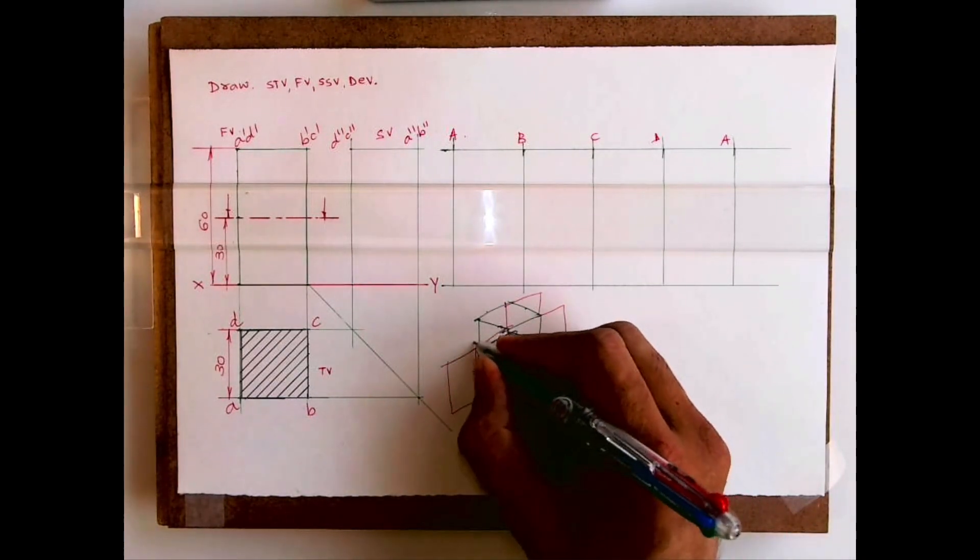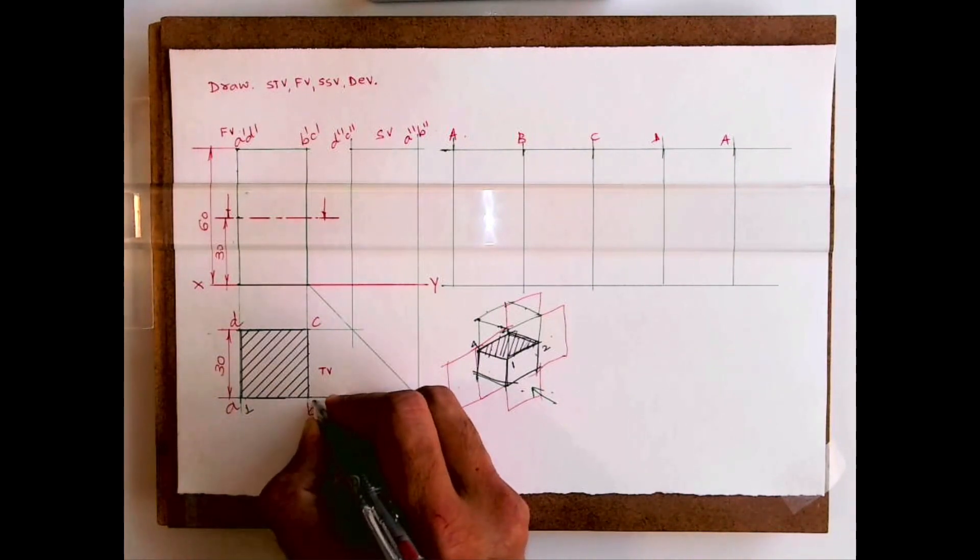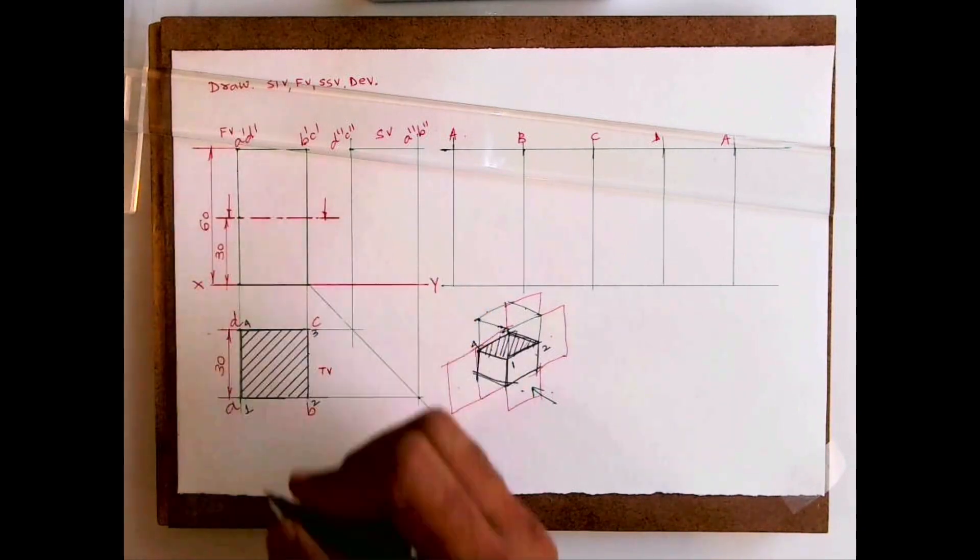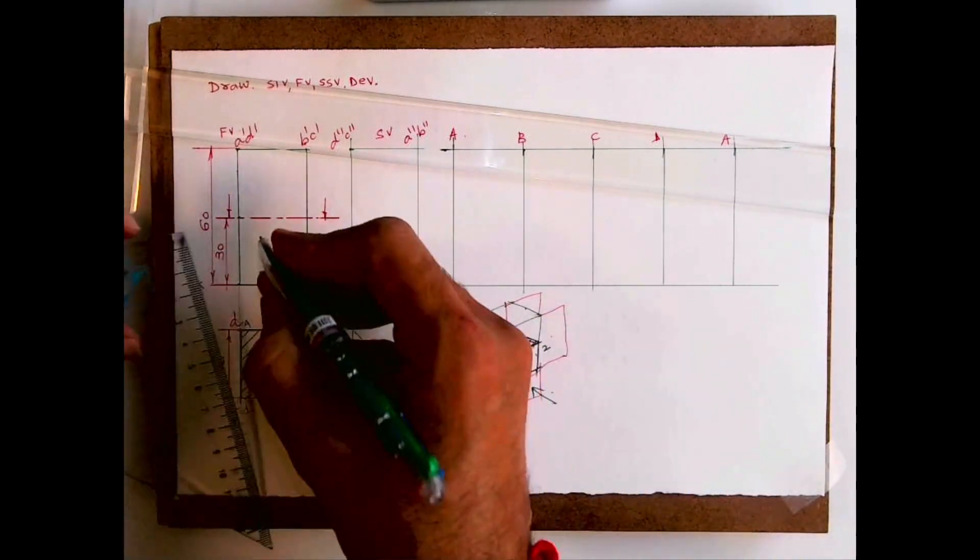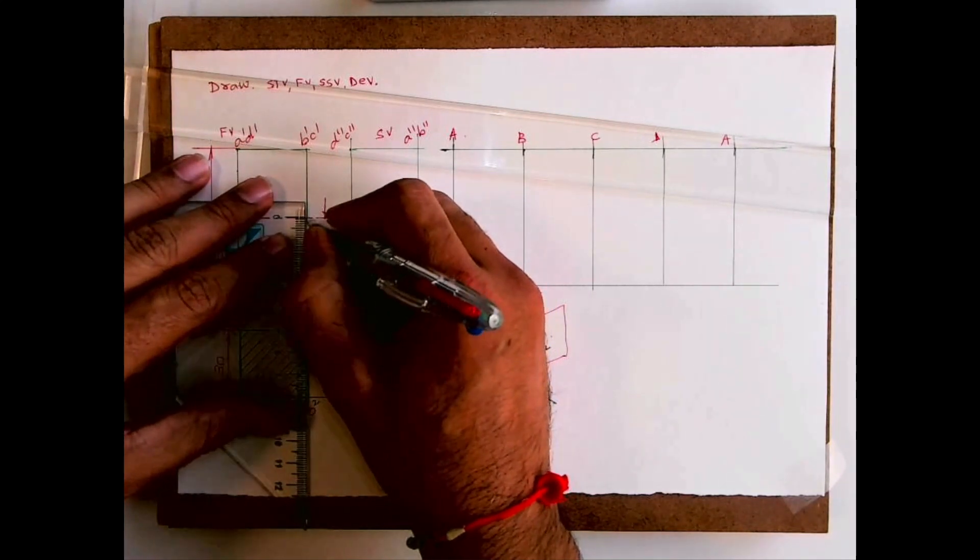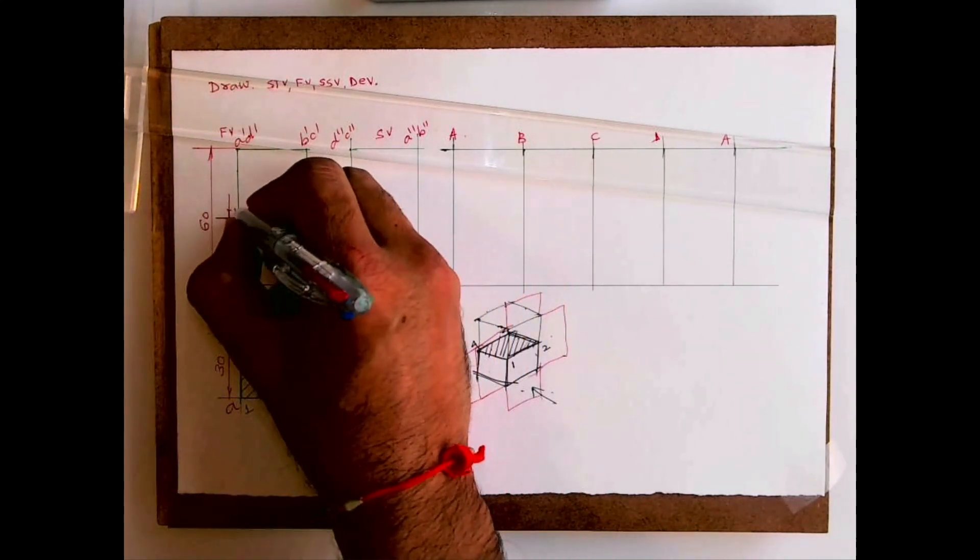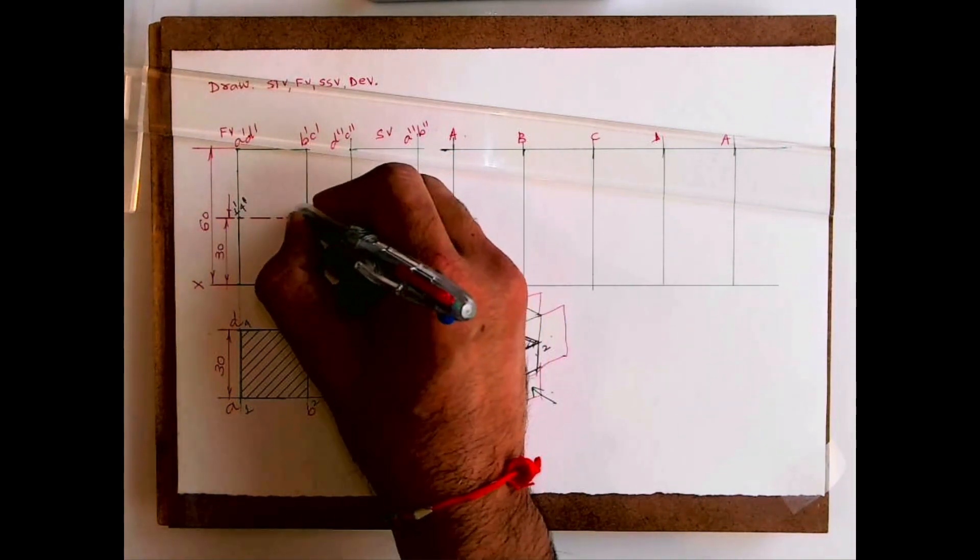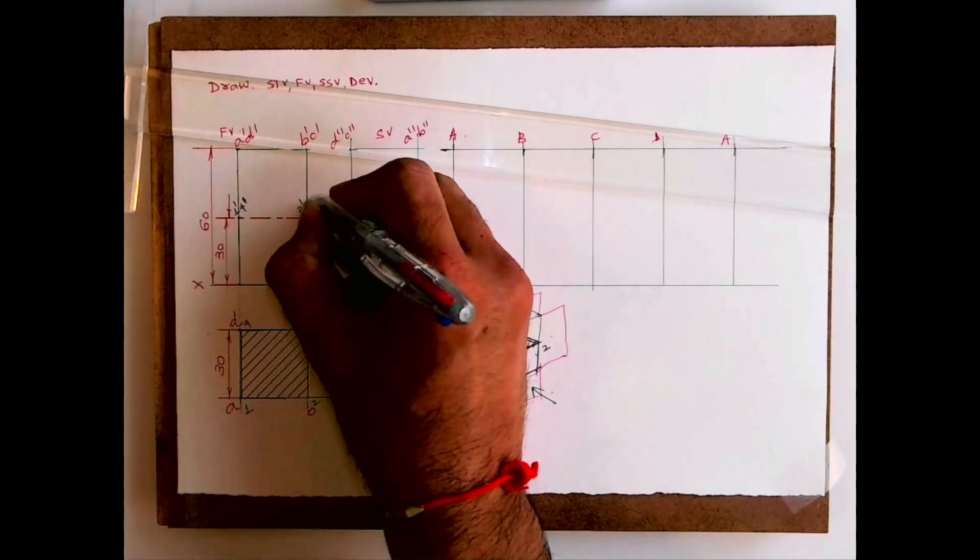After this, I'll write this as 1, 2, 3, 4, the cut points. I'm writing 1, 2, 3, 4. So 1, 2, 3, 4. So on A it is 1, so here it will be on A dash, it will be 1 dash. See, this lower part will be dark. This is 1 dash, 4 dash, this is 2 dash, 3 dash.